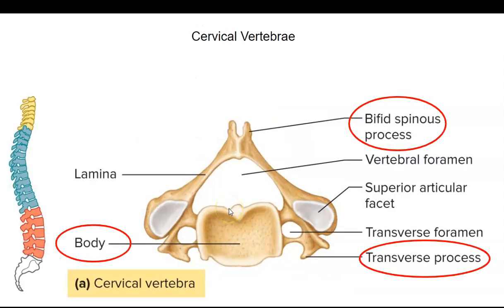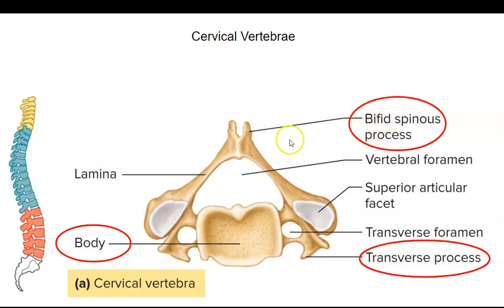Here's a cervical vertebra. There are three things I want you to know on all vertebrae: the vertebral body, which is where the intervertebral disc sits; the transverse process, which on cervical vertebrae is very small; and the spinous process, which pokes out posteriorly. In the case of the cervical vertebrae, the spinous process is bifurcated or split into two — a bifid spinous process.